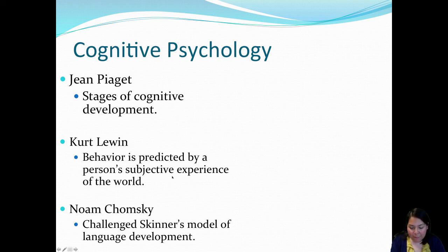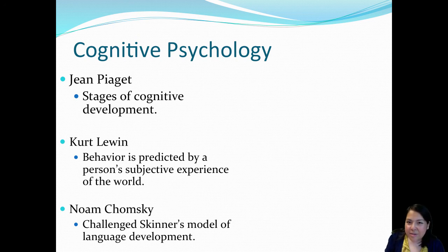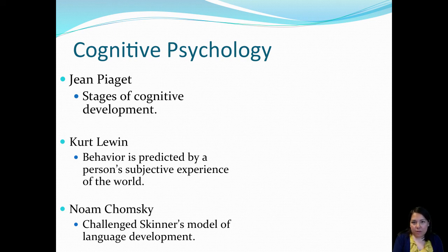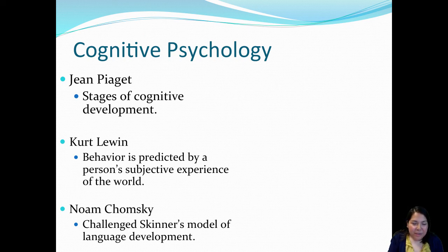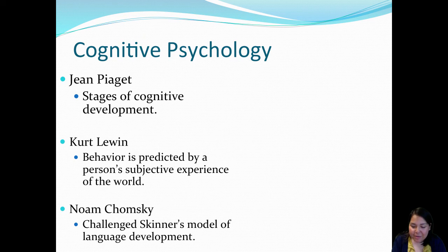Kurt Lewin, who we'll discuss more with social psychology, believed that two people could go through the same situation yet experience it in different ways. For example, two people who lost someone close to them — one person may experience a serious bout of depression, whereas another may be sad but is able to return to work within two weeks and move on. Two different people can go through the same situation yet experience it in two very different ways.